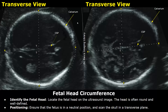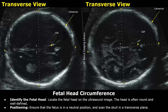To measure the fetal head circumference, first you have to identify the fetal head. Ensure that the fetus is in a neutral position, which means the neck is not flexed or extended. Scan the fetal head in a transverse plane. This bright hyperechoic structure is the skull bone or the calvarium.